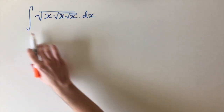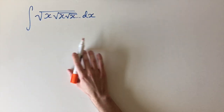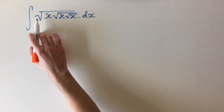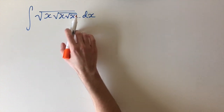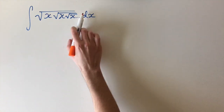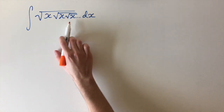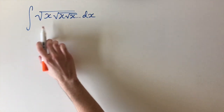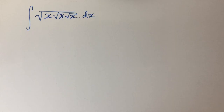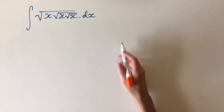We've got this crazy looking integral to look at — the integral of the square root of x, and under that square root we have another square root of x, and under that one we have another one, and this carries on until infinity. I've got two very nice solutions to look at.